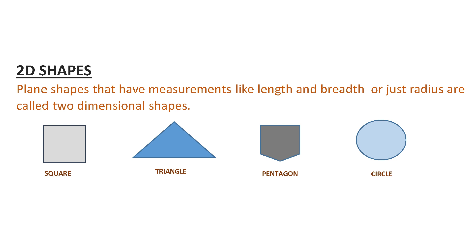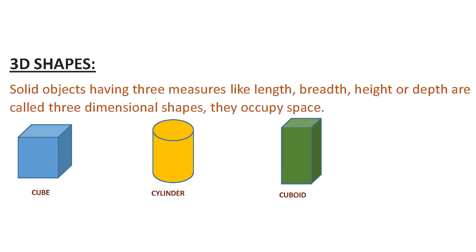Examples: square, triangle, pentagon, circle, and many others. What are 3D or three dimensional shapes? The solid figures having three measurements — length, breadth, and height or depth — are called 3D or three dimensional figures. 3D objects also occupy volume. Examples: cube, cylinder, cuboid, and there are many other examples.